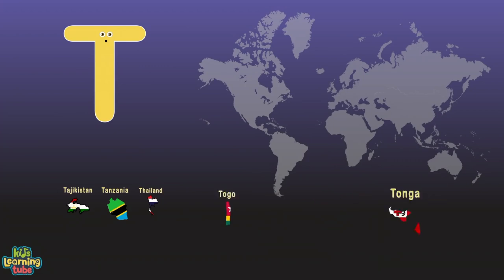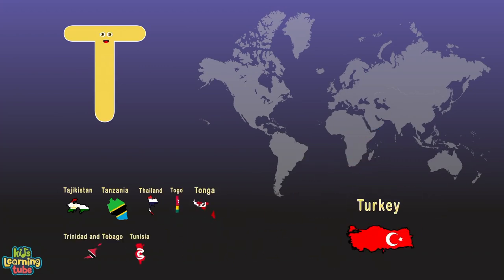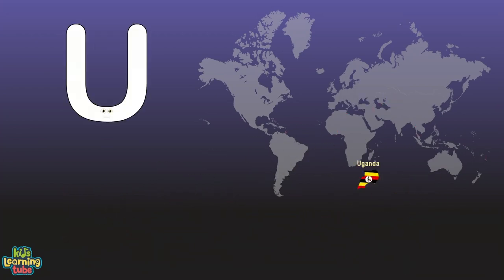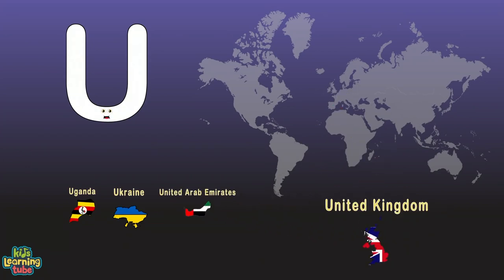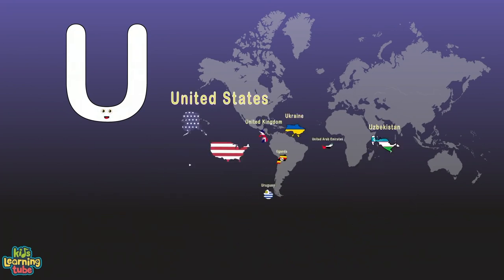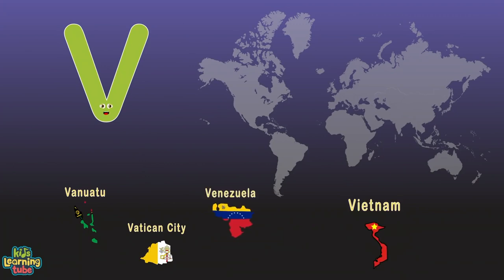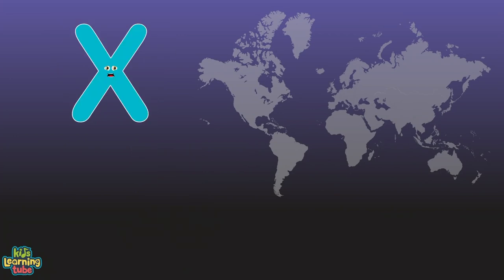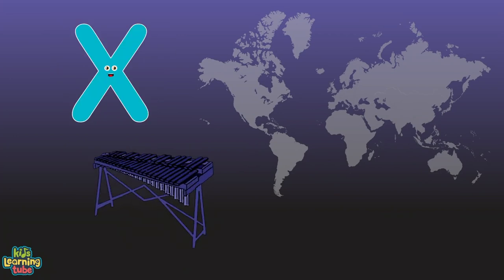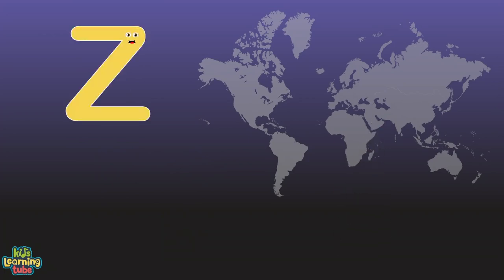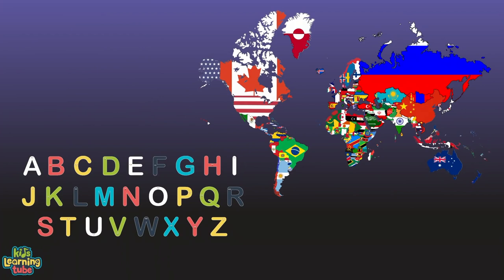T is for Tajikistan, Tanzania, Thailand, Togo, Tonga, Trinidad and Tobago, Tunisia, Turkey, Turkmenistan, and Tuvalu. U is for Uganda, Ukraine, United Arab Emirates, United Kingdom, United States, Uruguay, and Uzbekistan. V is for Vanuatu, Vatican City, Venezuela, Vietnam. W is for the world in which we all belong. There's no country that starts with X. Y is for Yemen. Z is for Zambia and Zimbabwe.